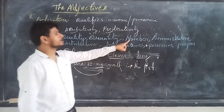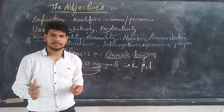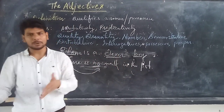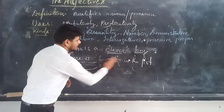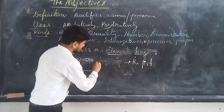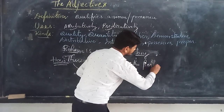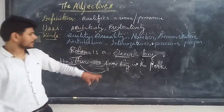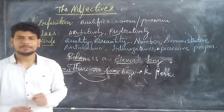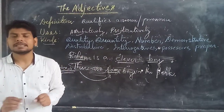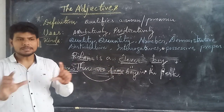Next we will talk about the adjective of number. An adjective of number is used when we say how many of a noun or pronoun. For example, 'There are some boys in the park.' Here, the word 'some' is an adjective of number because it helps us know the number of the noun.